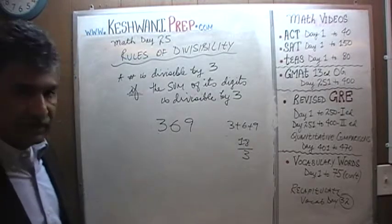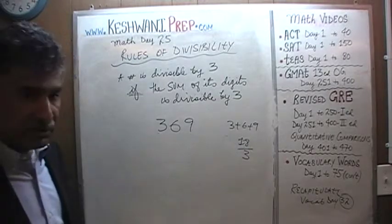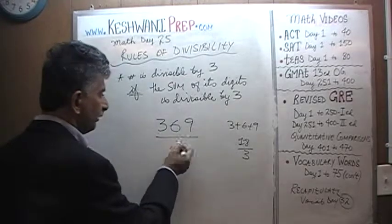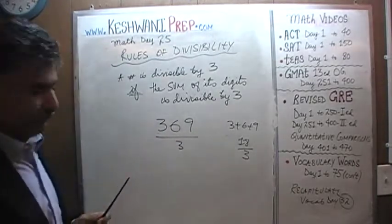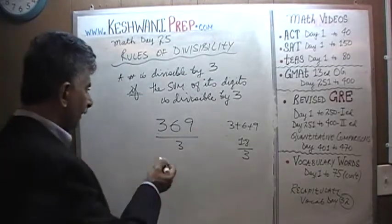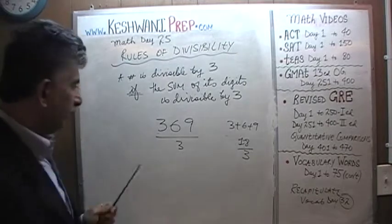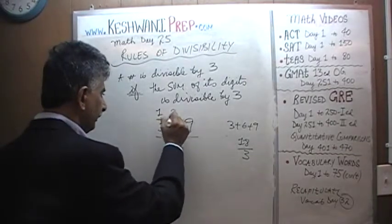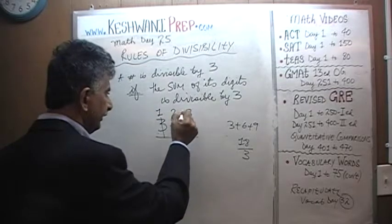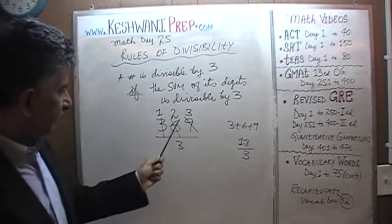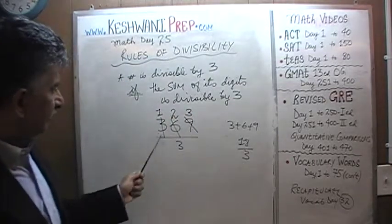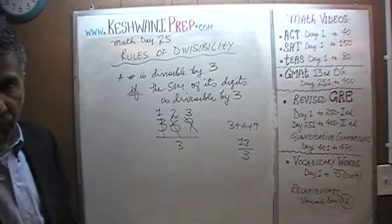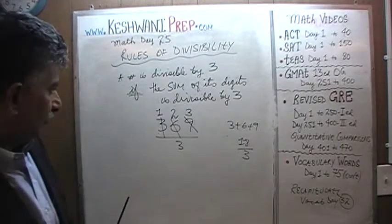When it's something simple like this, you can look at the individual digits and tell. Every single digit of 369 is a multiple of 3: 3 divided by 3 is 1, 6 divided by 3 is 2, 9 divided by 3 is 3. So 369 divided by 3 is 123.